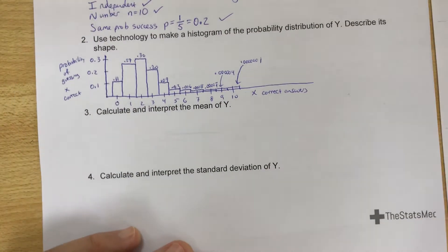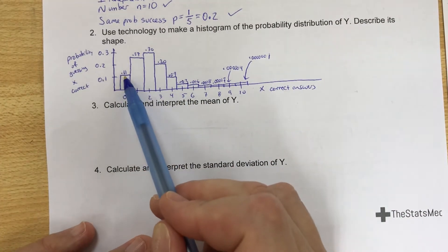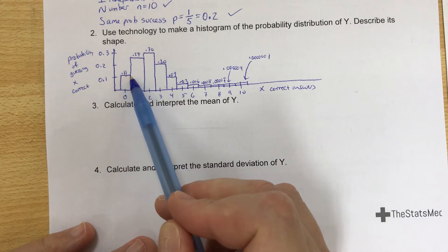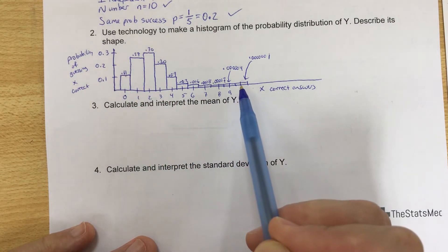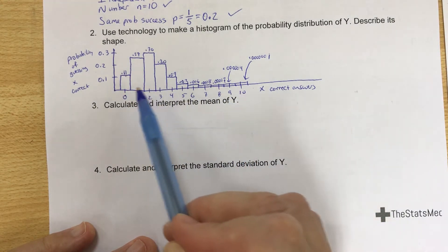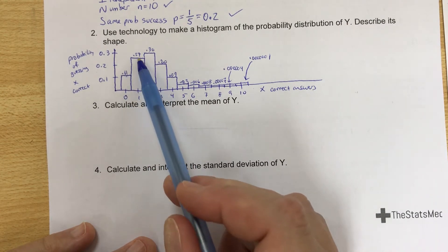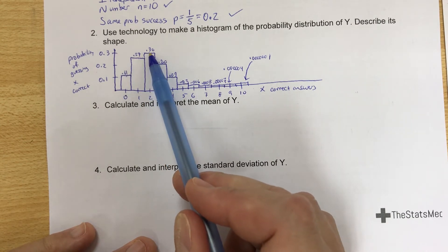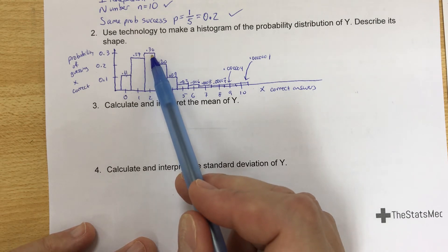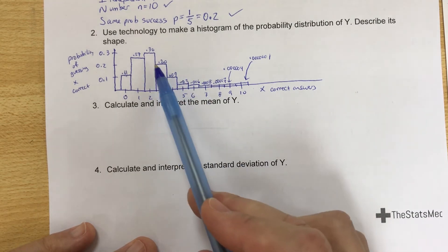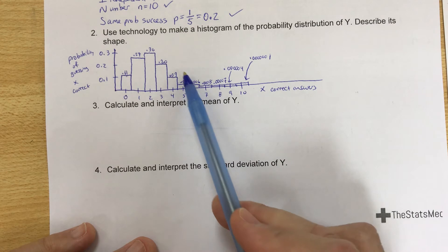You'll notice we don't even see what's happening here for the last few questions. If you look at my graph, the probabilities of getting zero right. If you guess randomly at 10 multiple choice questions with five choices, the probability of getting none of them right is 0.11. The probability of getting exactly one question right is 0.27. And then the highest probability is you get two correct. It's 0.3.